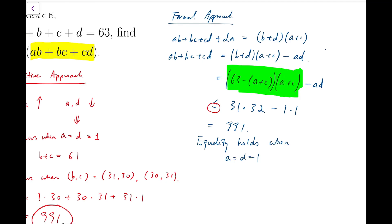So equality holds when A and D are both 1, and A plus C is either 31 or A plus C is 32, and we solve for the unknowns.